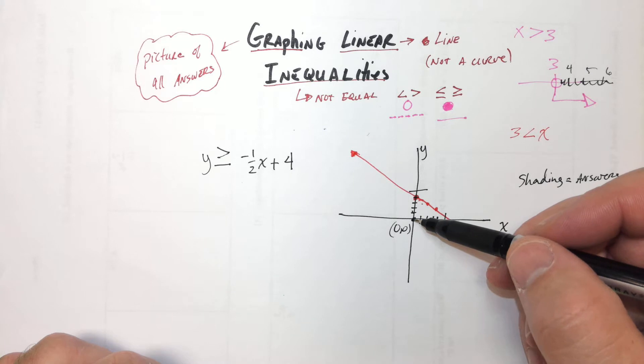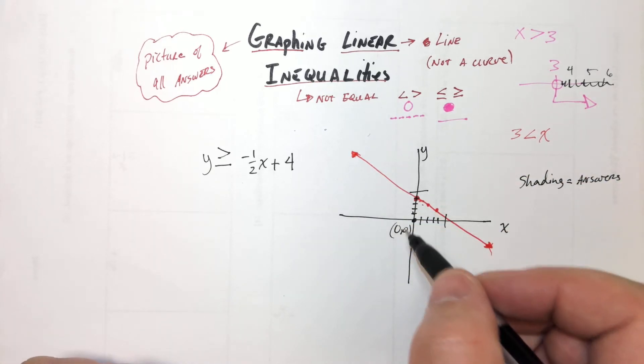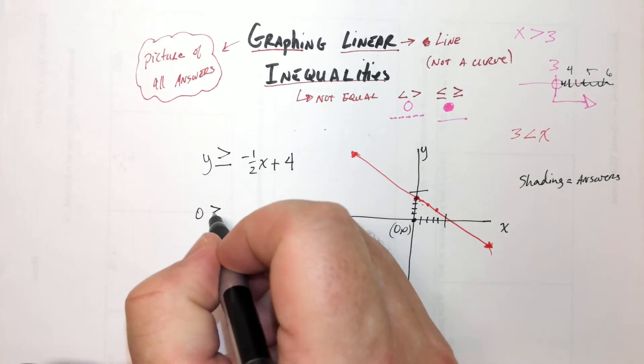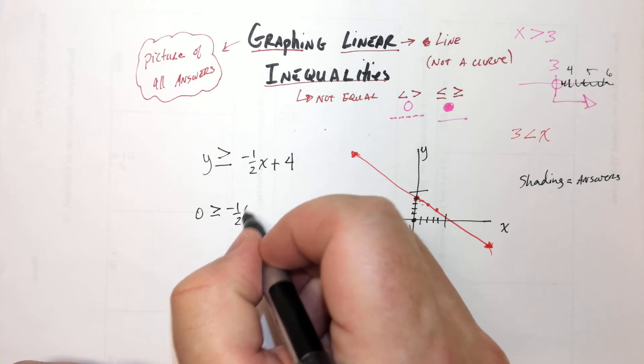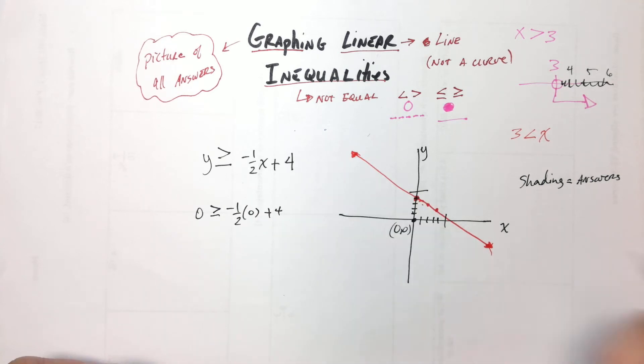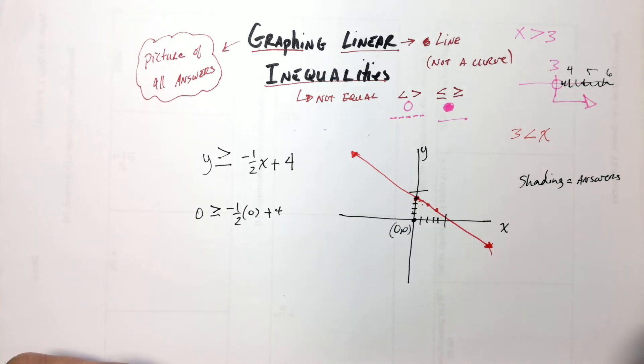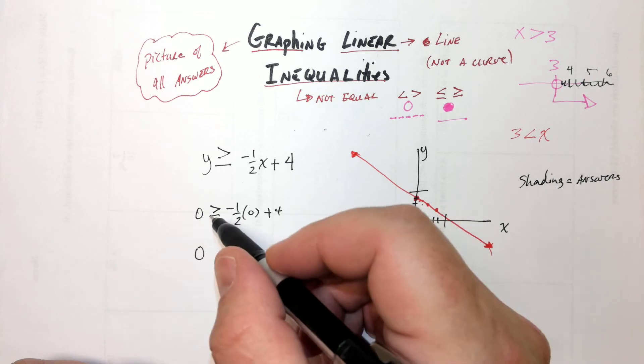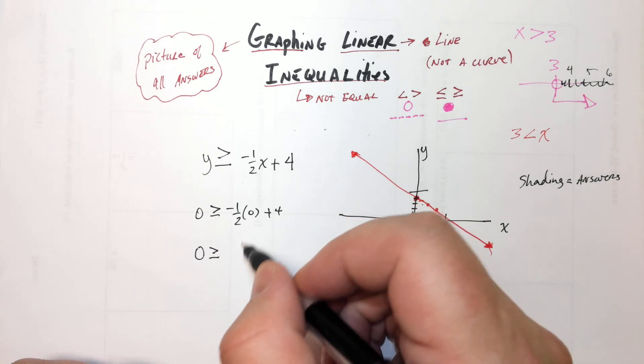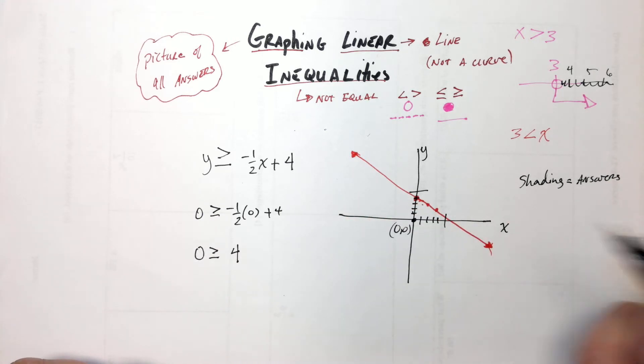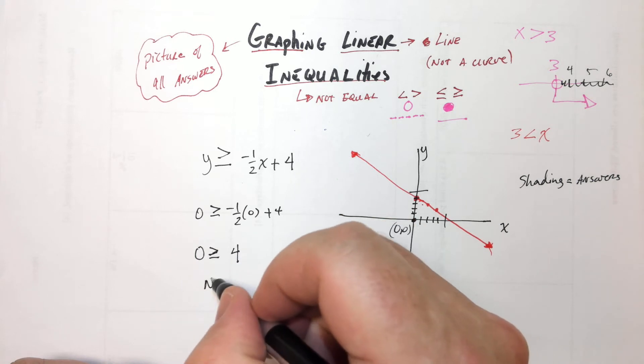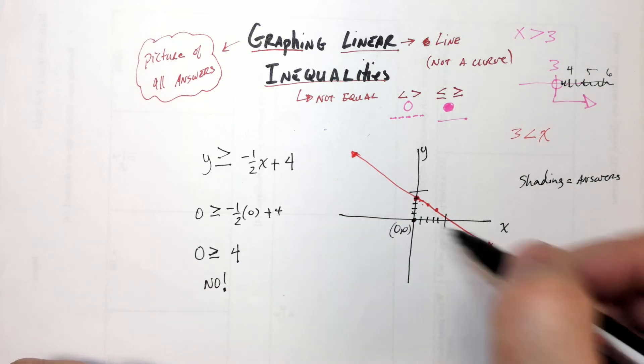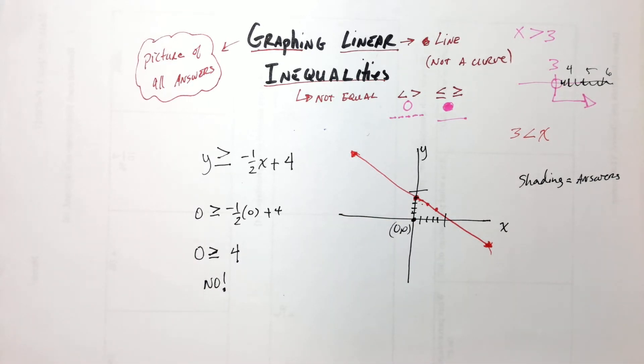So, like, take zero, zero, and plug it in. So I'm going to put zero for y, greater than or equal to negative one-half, zero for x, plus four. And you see if that's true. Let's see. Is zero greater than or equal to four? No. I don't think so, either.